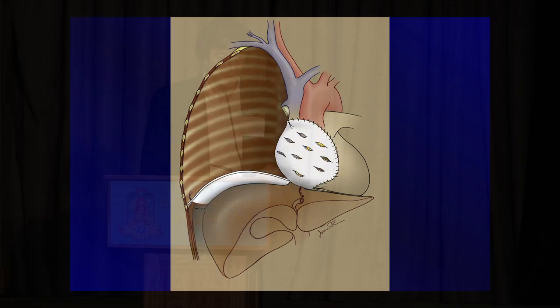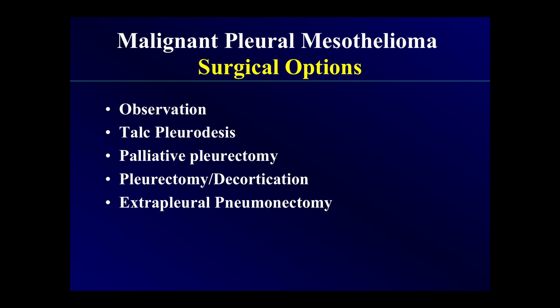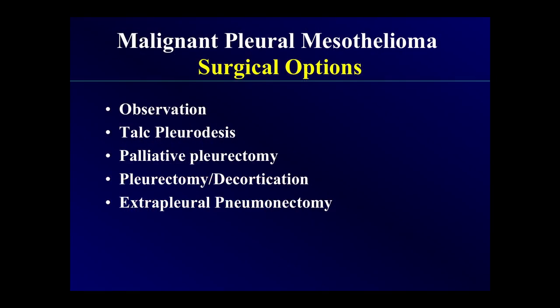What are your surgical options? We can debate pleurectomy/decortication versus extrapleural pneumonectomy, but the bigger debate is whether you should do surgery for mesothelioma at all. There was the MARS trial, which said absolutely nothing — all it showed is that you can't randomize the two. The conclusions felt very biased against surgery. Your options are: leave them alone (I completely disagree with that); talc the patient and expand the lung; or do an MCR/R1 resection — either pleurectomy/decortication or extrapleural pneumonectomy.